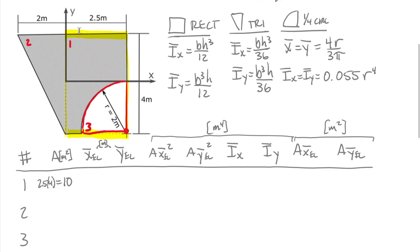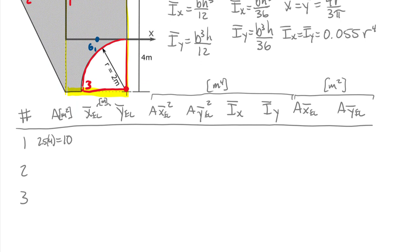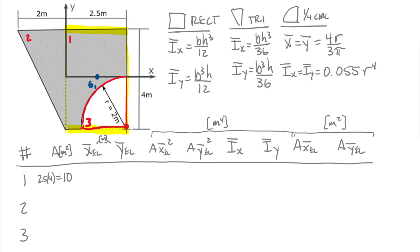For the rectangle (4 m height, 2.5 m width): area = 2.5 × 4 = 10 m². The centroid G1 sits at the center. The horizontal distance from the y-axis to G1 is 2.5/2 = 1.25 m. The vertical distance from the x-axis to G1 is zero — the centroid of the rectangle sits on the x-axis.